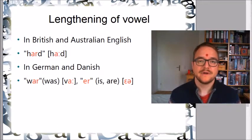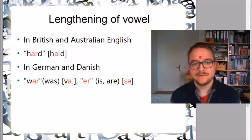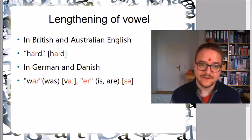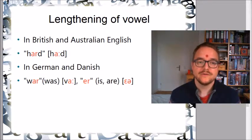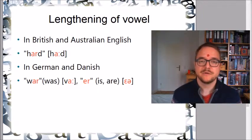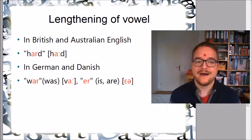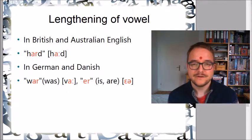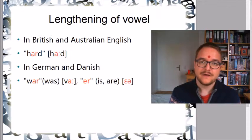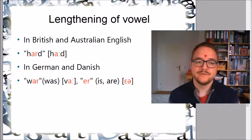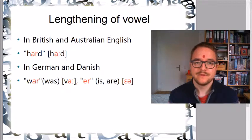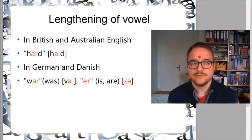In some languages like British English or German, the R can also have an effect on the vowel that precedes it — it makes the vowel longer. For example in British or Australian English you say 'hard', so you don't really hear the R distinctly anymore, but it gets lengthened. In German 'war' means 'he was', or in Danish 'er' means 'is' — the vowel gets lengthened and the R is not really audible anymore.